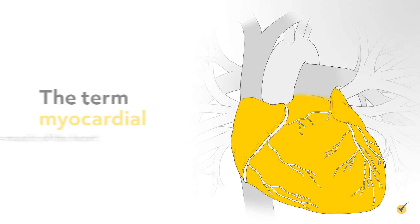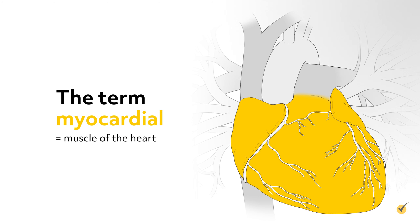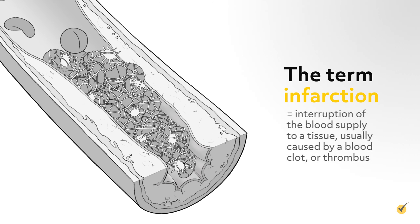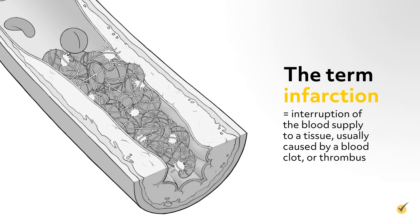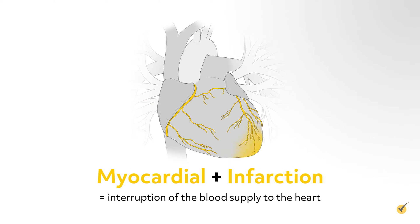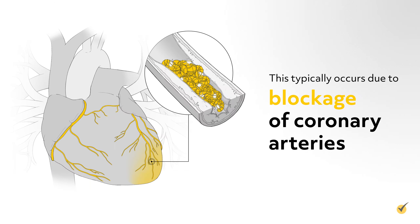The term myocardial means muscle of the heart. An infarction is an interruption of the blood supply to a tissue, usually caused by a blood clot or thrombus. Therefore, a myocardial infarction is the interruption of the blood supply to the heart, which typically occurs due to blockage of coronary arteries.